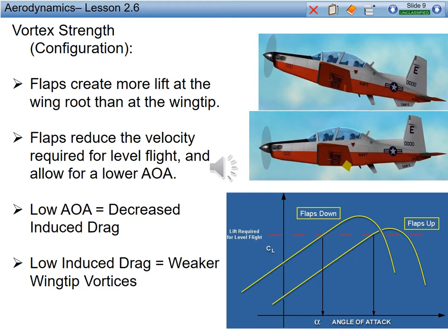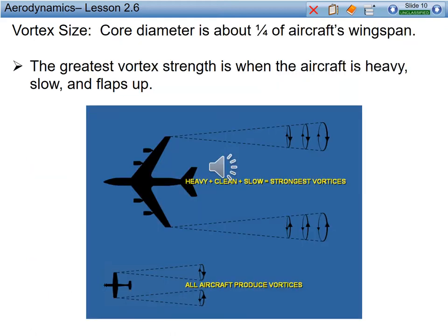Vortex strength with configuration: flaps create more lift at the wing root than at the wingtip. Flaps reduce the velocity required for level flight and allow for a lower angle of attack. A lower angle of attack means decreased induced drag production, and lower induced drag therefore makes weaker wingtip vortices. Vortex core diameter is about a quarter of the aircraft's wingspan. Vortex strength is greatest when the aircraft is heavy, slow, with flaps up — heavy, clean, and slow. That's when your greatest vortex strength is going to be occurring.